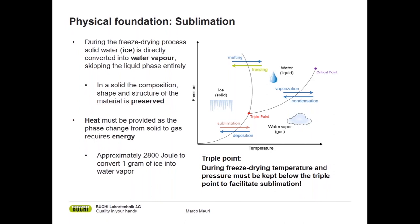How does this work? If we look at the phase diagram of water on the right-hand side, we can see that water at lower temperatures and various pressures is available as a solid. At higher temperatures and a bit higher pressures, water is available as a liquid. At even higher temperatures and lower pressures, water is available as a gas in vapor form. What we want to do in freeze drying is sublimation — moving directly from ice to vapor without going over the liquid phase.